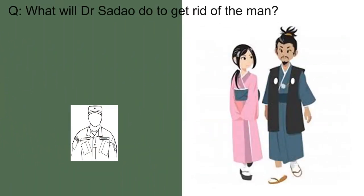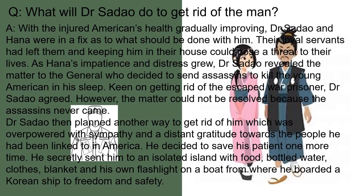What will Dr. Sadao do to get rid of the man? With the injured American's health gradually improving, Dr. Sadao and Hannah were in a fix as to what should be done with him. The loyal servants had left and keeping him in the house could pose a threat to their lives. Dr. Sadao revealed the matter to the old general, who decided to send assassins to kill the young American in his sleep. However, the assassins never came. Dr. Sadao then planned another way, overpowered by his sympathy and distant gratitude toward the people he had been linked to in America. He secretly sent him to an isolated island with food, water, clothes, a blanket, and his own flashlight on a boat, from where he boarded a Korean ship to freedom and safety.